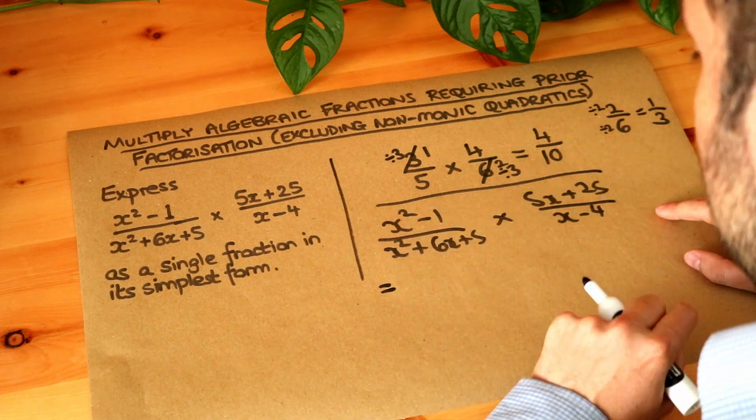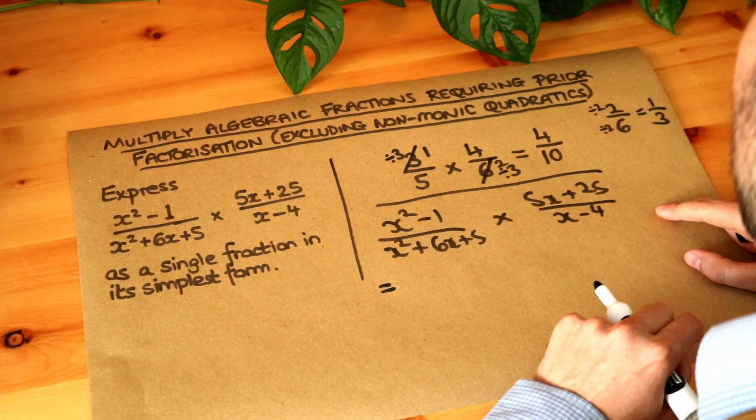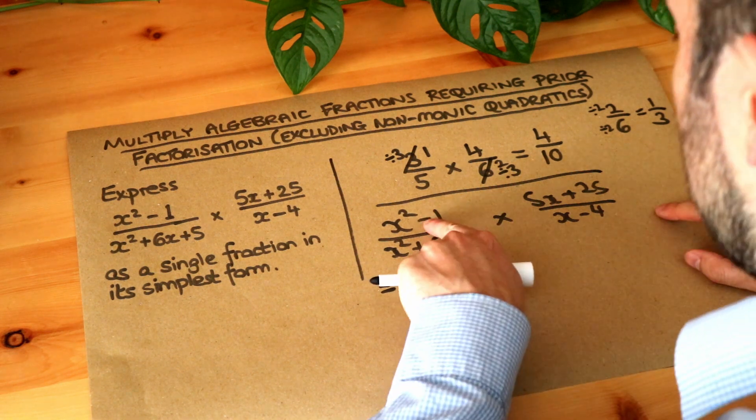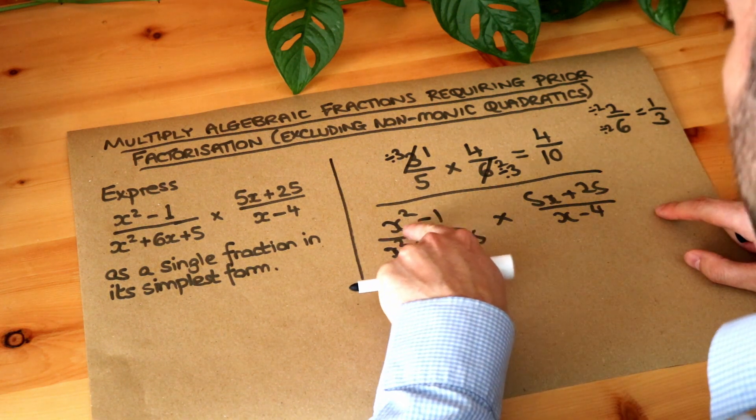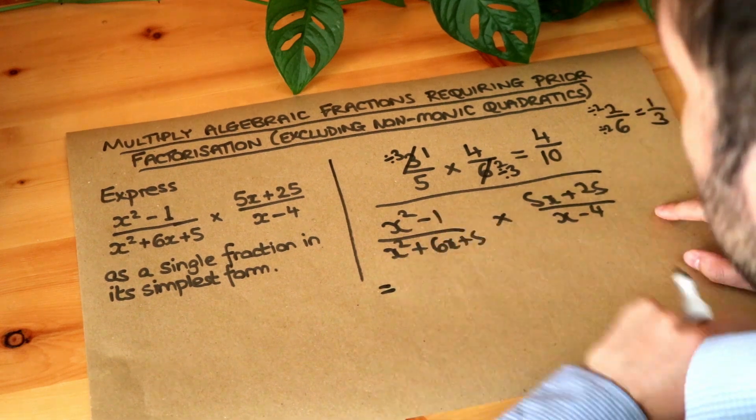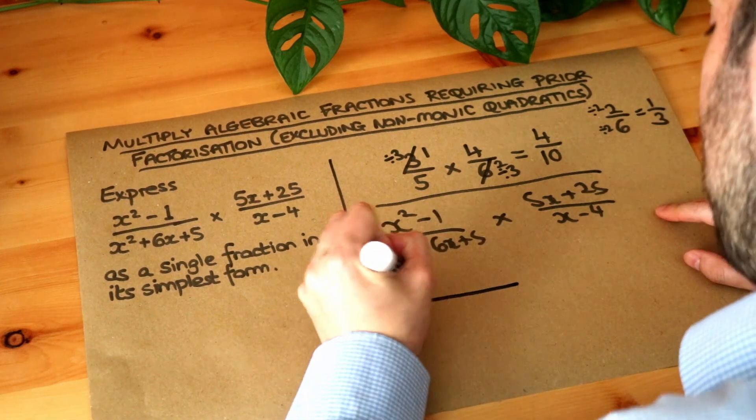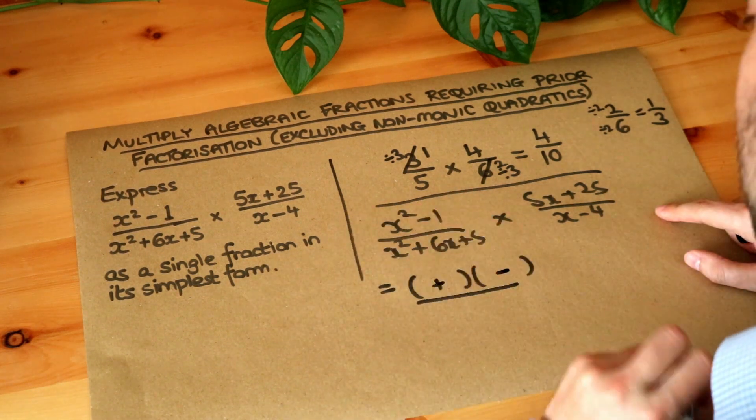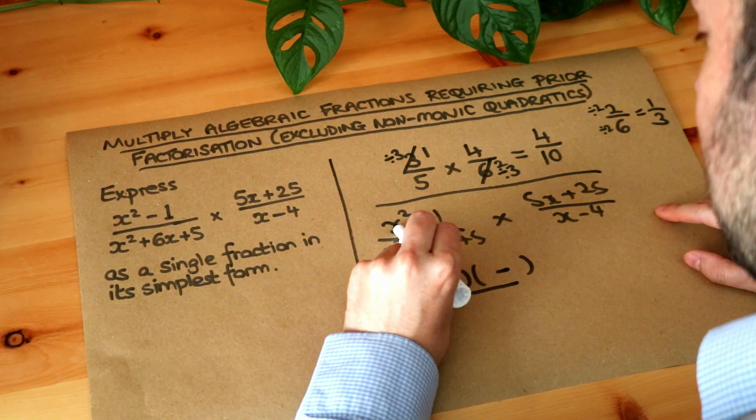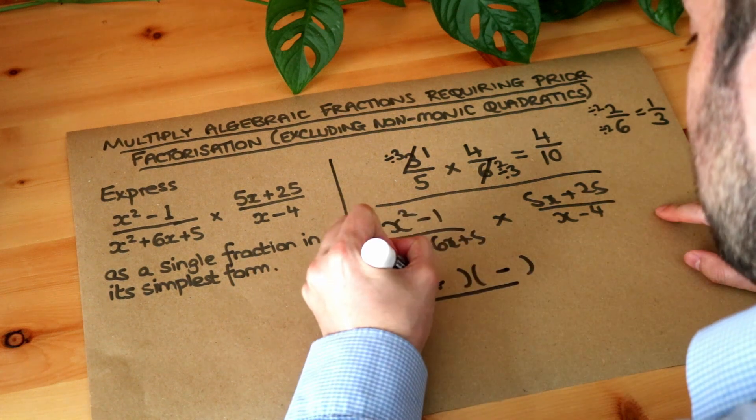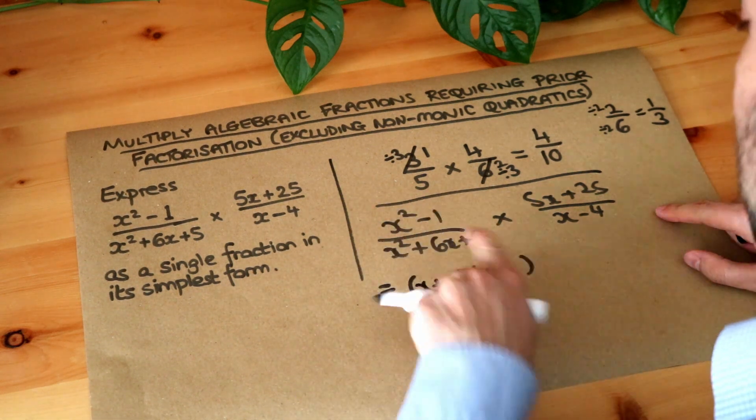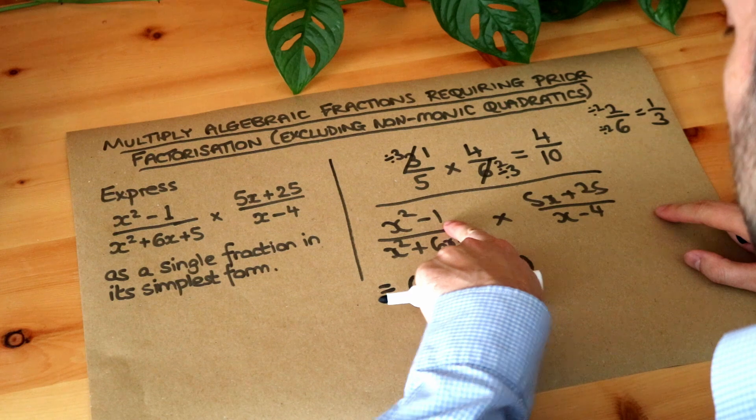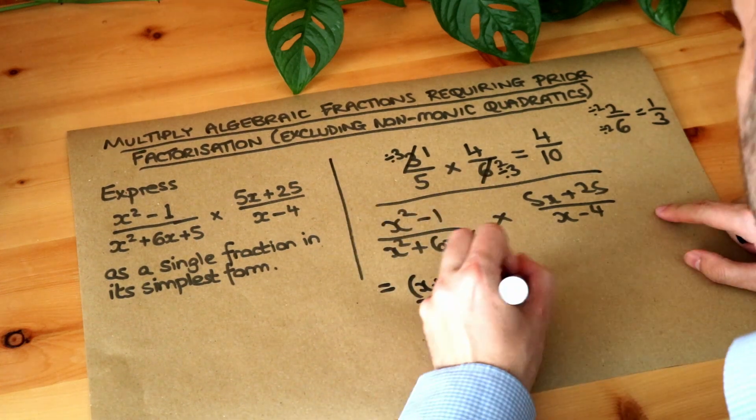Now this is a quadratic and more than that it's a difference of two squares. Because it's a difference, a subtraction of a squared thing, it's x squared and another squared thing because 1 is a square number. And do you remember the way we factorize that is to have two brackets, 1 plus, 1 minus. And then we do the square root of the first thing. So the square root of x squared is just x. And we do the square root of the second thing, the square root of 1 is 1. So we put the 1 here and now that's factorized.